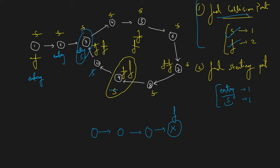The time complexity of this algorithm is approximately O(n) — the fast pointer may take some extra turns but it remains near O(n). The space complexity is O(1) because we are only using the slow, fast, and entry pointers with no extra space. You can even minimize pointer usage by reusing them.